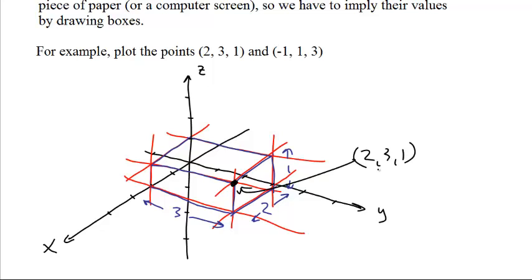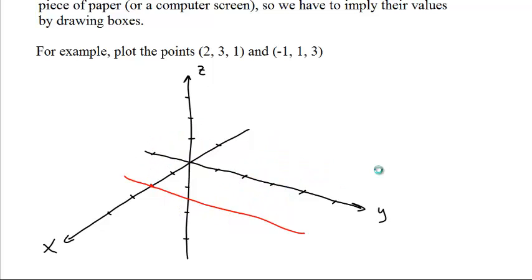Now to plot (-1, 1, 3). Let me clean all this up. Is there a way for me to do that faster? Not really. Negative 1, 1, 3.